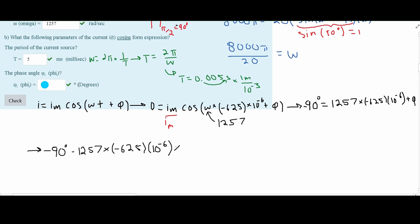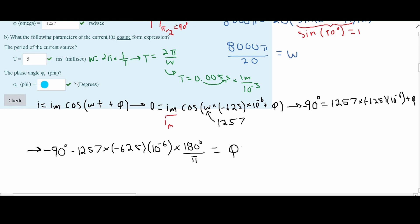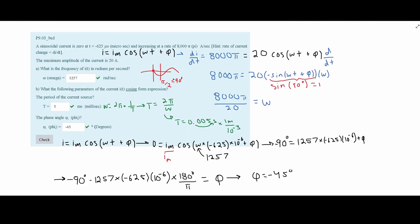To do this, we are going to multiply the top by 180 degrees and divide the bottom by a pi. This will get rid of the radians, leaving us with degrees. And this will be our phase angle once we solve for it in a calculator. In doing this, we are going to get that our phase angle is equal to approximately negative 45 degrees. And that is how you would go about solving this problem.